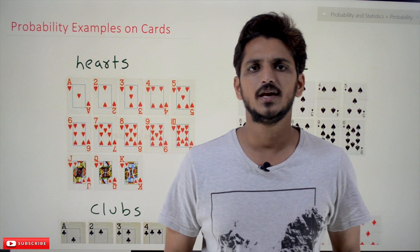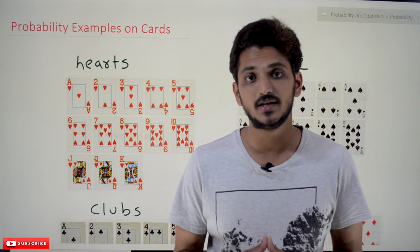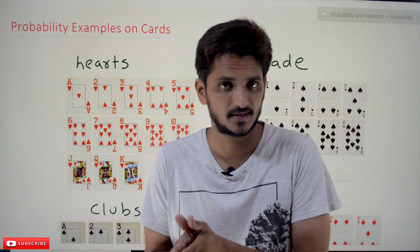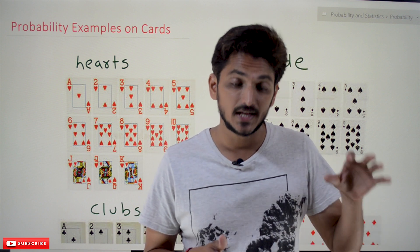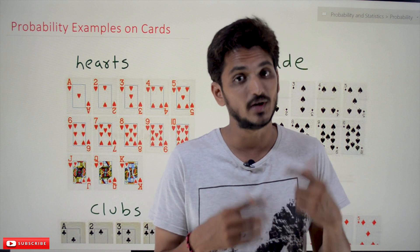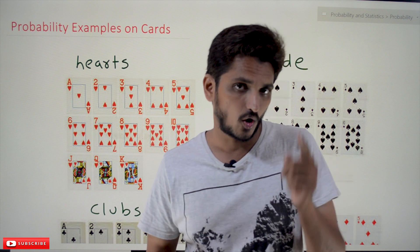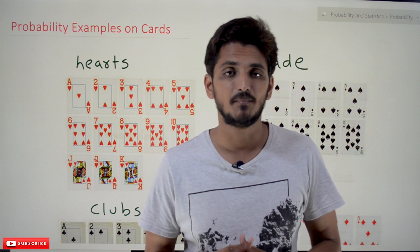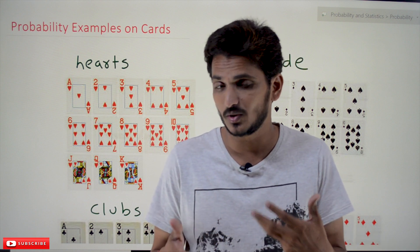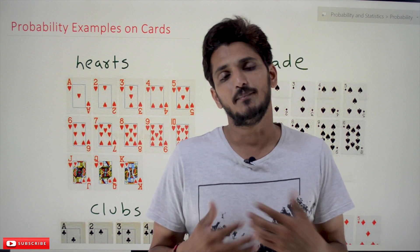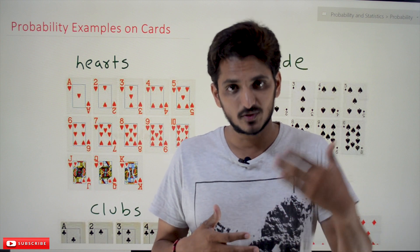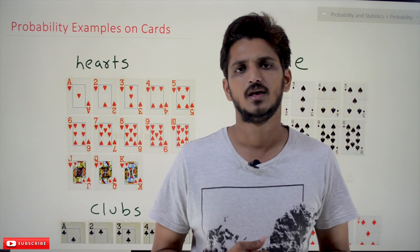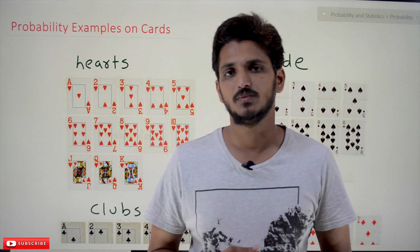Hi, welcome to Learning Monkey. I am Raghuvir. In this class we'll discuss some probability examples on playing cards. In our previous classes we clearly discussed how to find the probability value and we have done some examples on coin and dice. Please watch those classes and come back here, as how to find probability was explained there. The link for the playlist is provided in the description below.